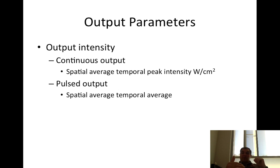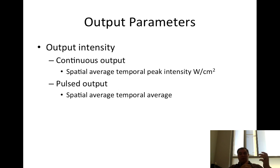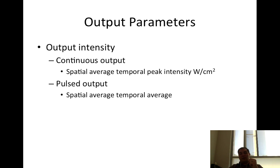For output intensity, continuous output is measured as spatial average temporal peak intensity (SATP) in watts per centimeter squared. Pulsed output is measured as spatial average temporal average (SATA), also in watts per centimeter squared. Make sure you're looking at the handout posted on Blackboard, which was also used last lecture.